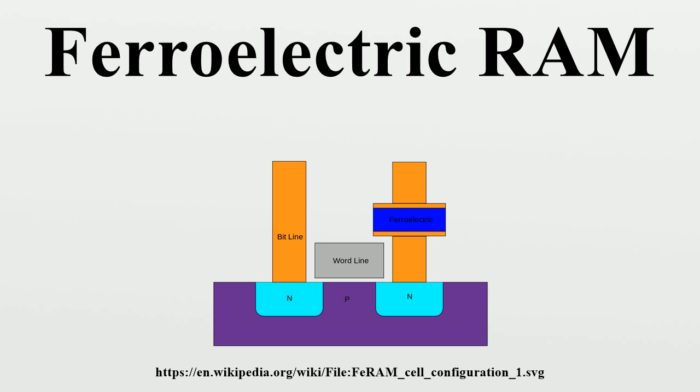Reading, however, is somewhat different than in DRAM. The transistor forces the cell into a particular state, say 0. If the cell already held a 0, nothing will happen in the output lines. If the cell held a 1, the reorientation of the atoms in the film will cause a brief pulse of current in the output as they push electrons out of the metal on the downside. The presence of this pulse means the cell held a 1. Since this process overwrites the cell, reading FeRAM is a destructive process and requires the cell to be rewritten if it was changed.